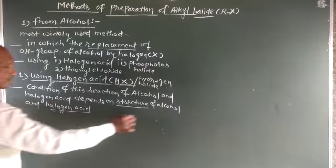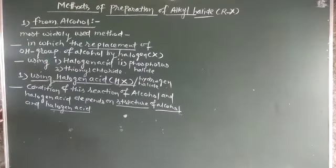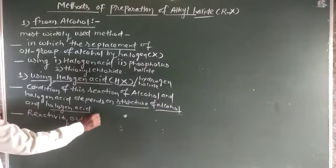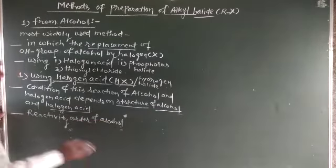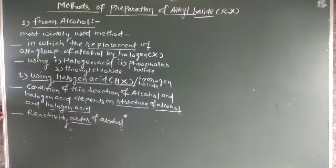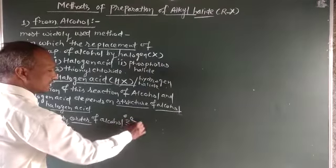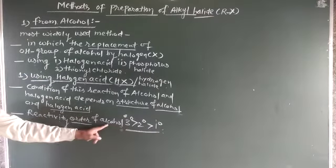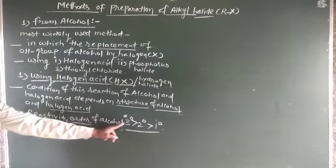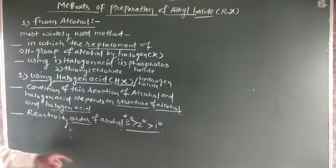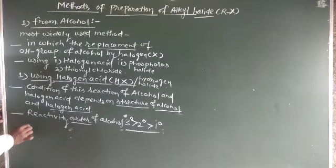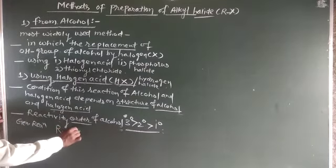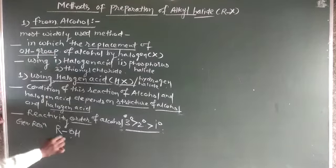The reactivity order of alcohol is: tertiary alcohols are more reactive than secondary, and primary alcohols are the least reactive. Now we will see the general reaction: R-OH represents alcohol, which has an OH group.